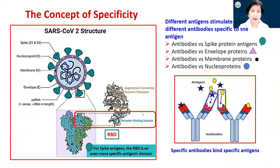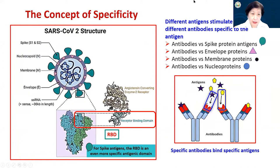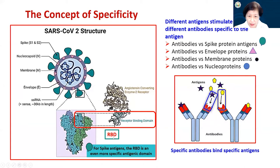The production and stimulation of antibodies is very specific to the antigen. Looking at the spike protein more closely: it has S1 and S2 subunits. We want to zero in on the receptor binding domain — this is a very important part of the spike protein; it is the one that attaches to the ACE2 receptor. So for spike antigens, this RBD is an even more specific antigenic domain.